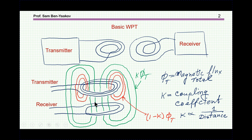A wireless power transfer system consists of two antennas — one at the transmitter connected to the driver, and then there is a receiving antenna connected to the receiver, which has a rectifier and some other electronics in it, in order to extract the power from the antenna.